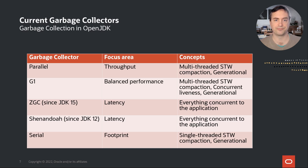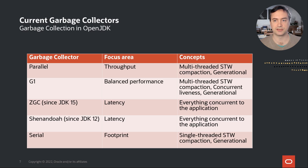Second, there is the G1 collector, the default collector since JDK 9. It tries to balance throughput and latency — on the one hand, doing stop-the-world pauses and using a generational scheme like ParallelGC, and on the other hand, doing lengthy operations concurrent, that means in parallel to the application, which decreases pause times. Thirdly, there are the two new latency-focused collectors, ZGC and Shenandoah. They were introduced in JDK 15 and JDK 12, respectively. They try to do everything concurrent to the application with extremely small pauses.